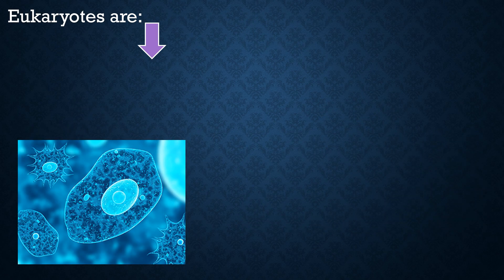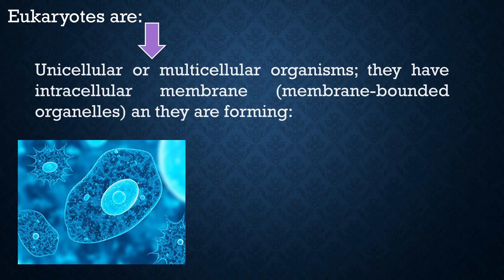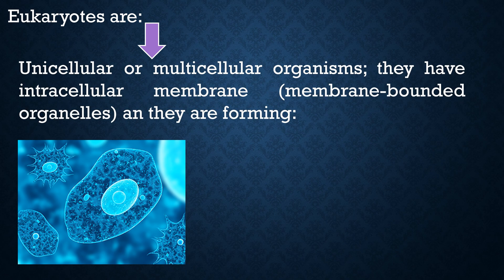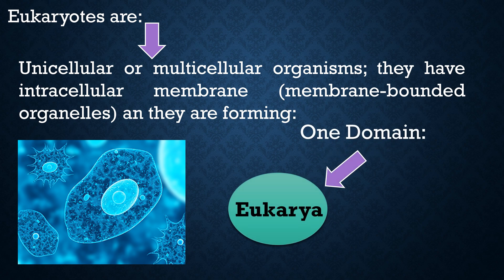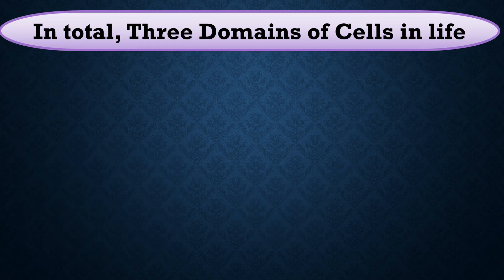Eukaryotic cells are unicellular or multicellular organisms. They have intracellular membranes, meaning they have membrane-bounded organelles. They form just one domain called Eukarya. In total, there are three domains of cells.